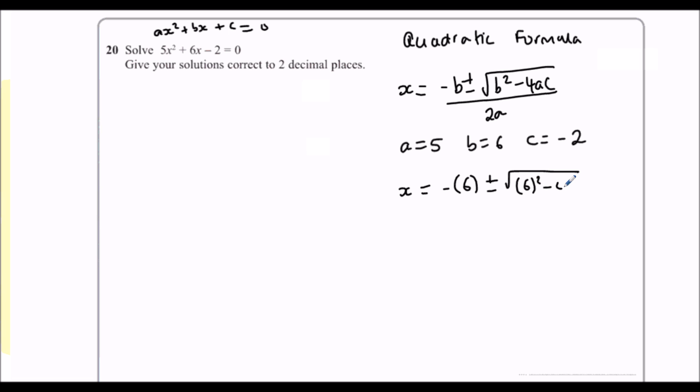So wherever I see b, I'm going to write 6. Wherever I see a, 5. And wherever I see c, minus 2. Over 2a, so two fives.